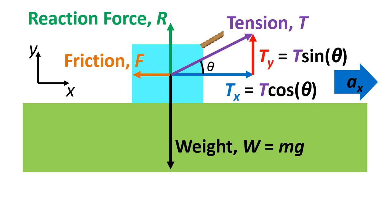So for Tx it's simply T cos theta and for Ty it's T sin theta. So Ty is the component of the tension that's pulling the object upwards in the y-axis. And the Tx is the component of the tension that's pulling the object across in the x-axis.